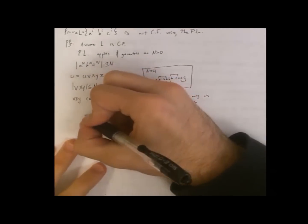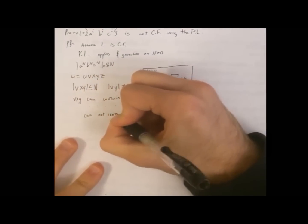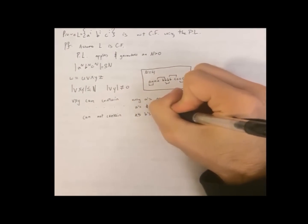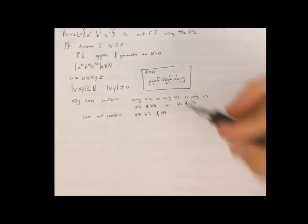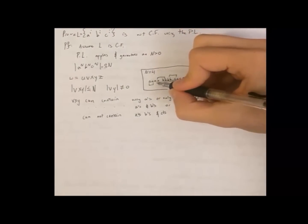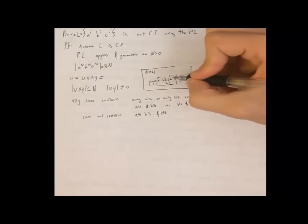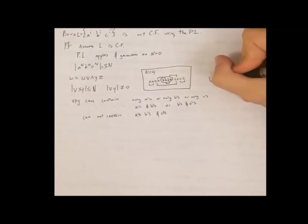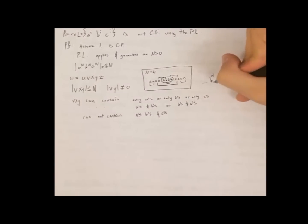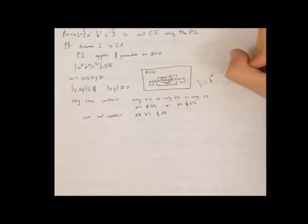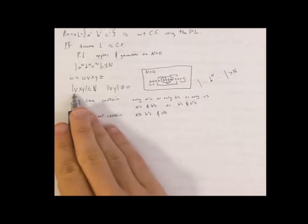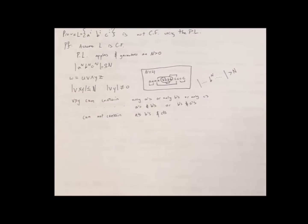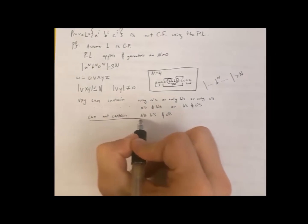Now, let's get to what it cannot contain. Cannot contain a's, b's, and c's. Because if it were to contain a's, b's, and c's, even if you take the smallest case where there's one a and only one c, what do you know? Well, you know that you just took all the b's. And how many b's are there? n b's. So if we have n b's with anything in front of it and anything behind it, what do we know about this? It's greater than n. And right here it says vxy is less than or equal to n. And it cannot be greater than n. Which is why it cannot contain a's, b's, and c's.